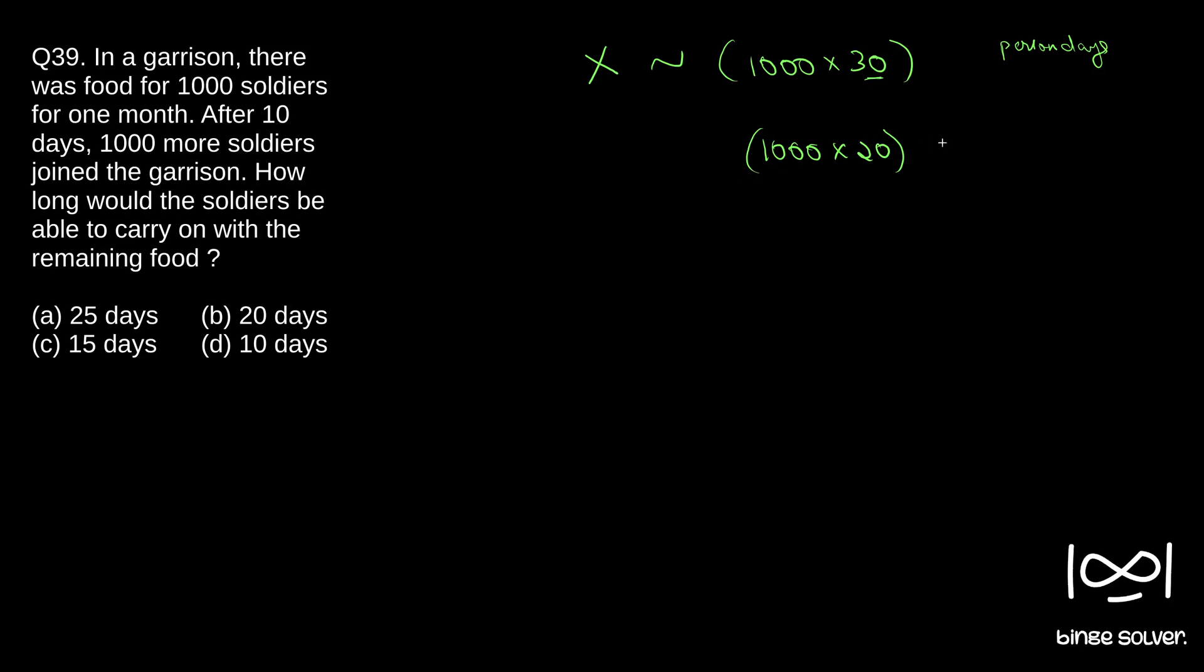So if there is 1000 × 20 person-days left of food, then the question says after 10 days, 1000 more soldiers added. So 2000 people are now there. And the question asks, how long would the soldiers be able to carry on with the remaining food? So from this point, if 2000 people are there, then 2000 × number of days, let's call it 2000 × D, is equal to, this becomes person-days.